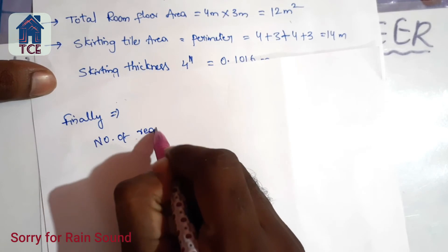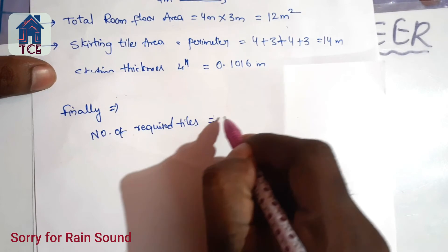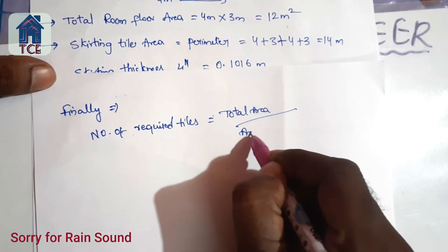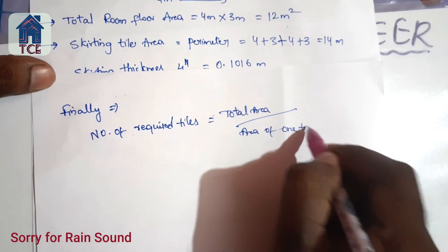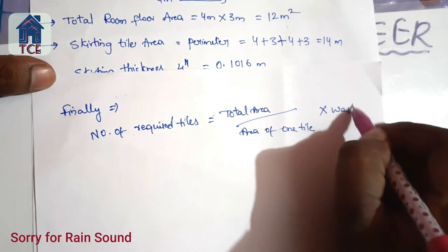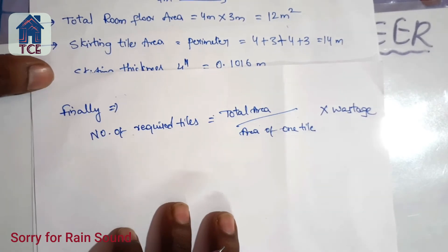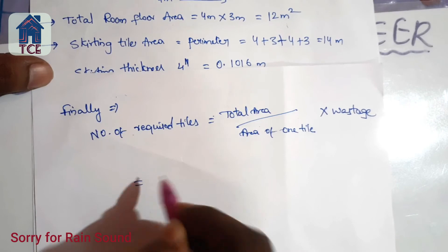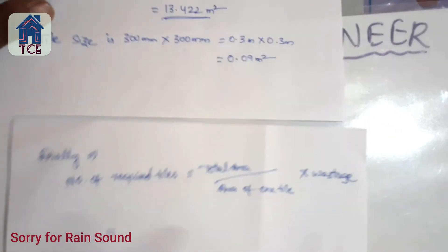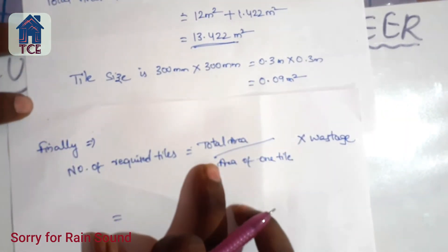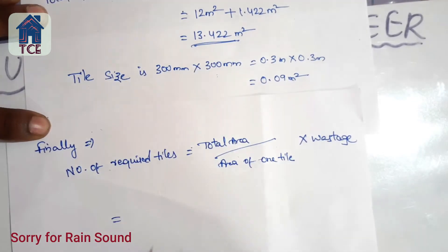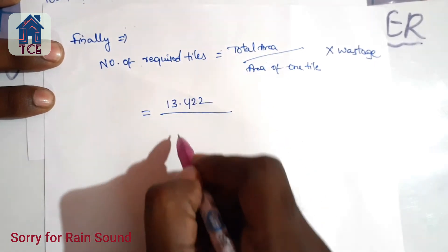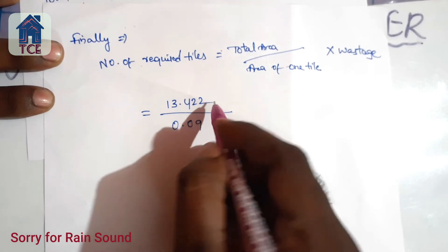The number of required tiles equals total area divided by area of one tile, multiplied by wastage. This is the general formula — a simple method of analysis. The total area is 13.422 square meters, and the area of one tile is 0.09 square meters.